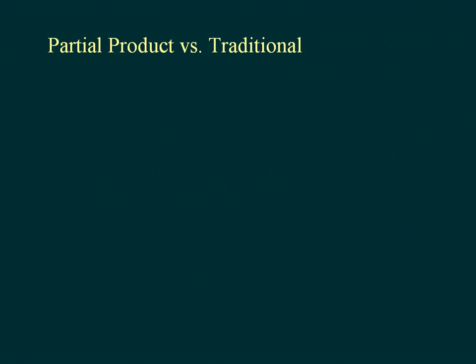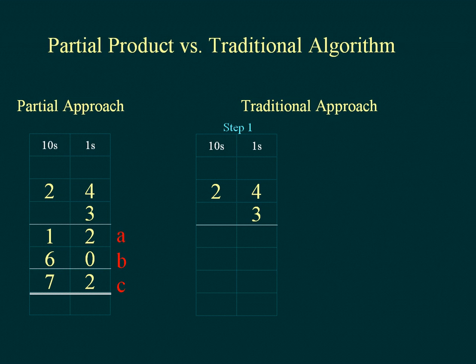Partial Product vs. Traditional Algorithm. The traditional approach is a shortened form of the partial product approach. Rather than record each of the partial products, they are regrouped and only the first digit is recorded for each multiplication.